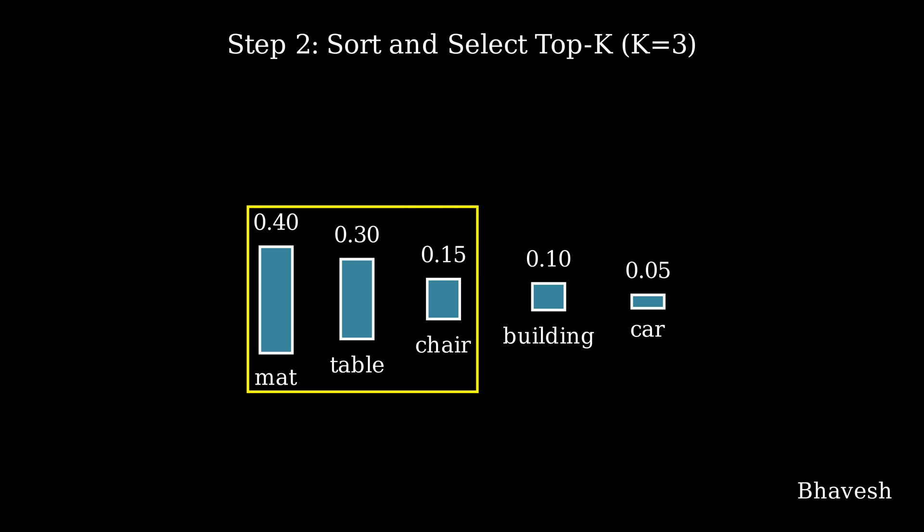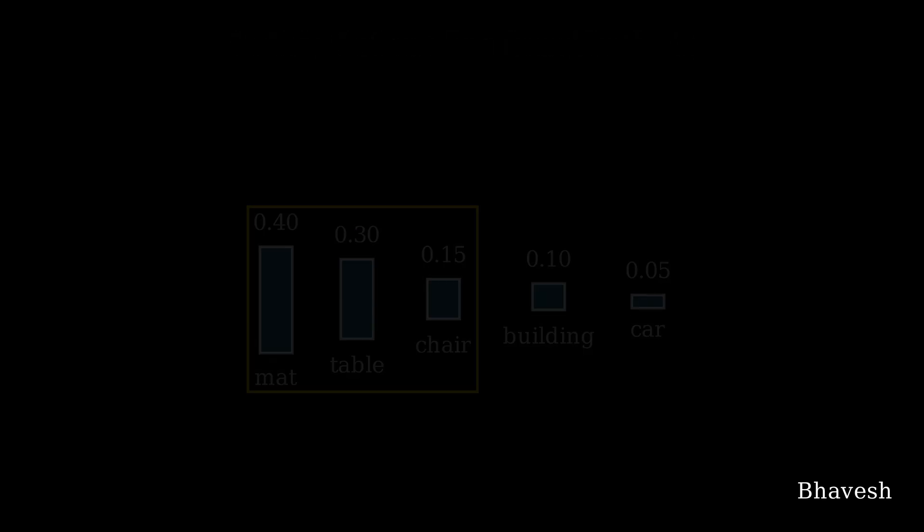Once you have this set of 3 words selected based on the highest probabilities, the LLM picks the next word to add to the sequence by randomly choosing from only these top K most likely options. Out of the 3, it randomly picks the word 'mat', and this is how Top-K sampling works.